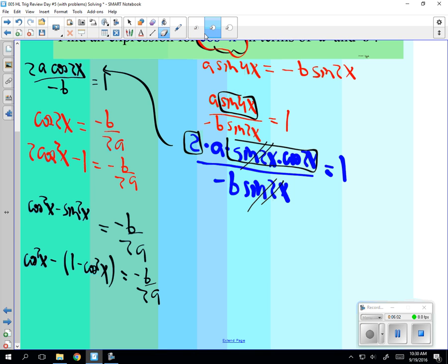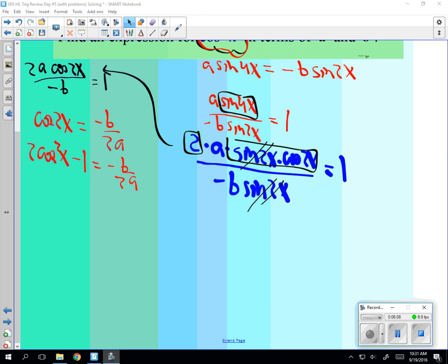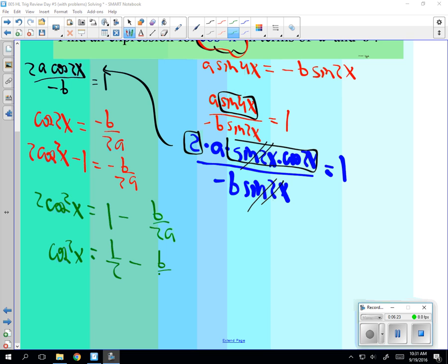So, part of IB is doing the algebra. So let's see if you can get the algebra correct. So I would move the 1 over: 1 minus b over 2a. And that will just give me cos squared is 1 half minus b over 4a.